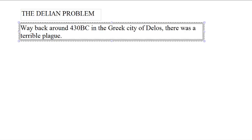Way back about 430 BC, in the ancient city of Delos, there was a terrible plague. People are dying left and right, and when this sort of thing happens, people look to the gods.